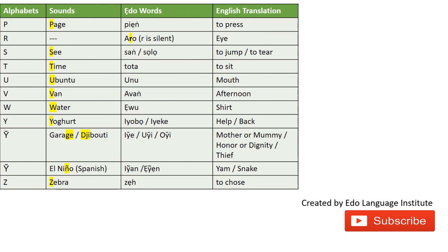We have the name 'UJI' — a beautiful EDO name for males — and 'UJI' means honor or dignity. The stronger J sound gives us 'UJI' which is the word for thief. It can also mean a robber, as a robber is also a thief.